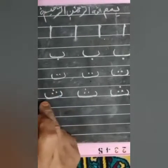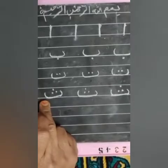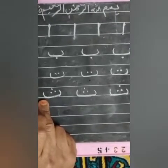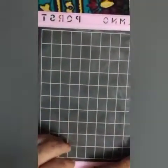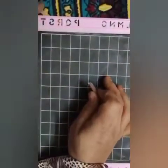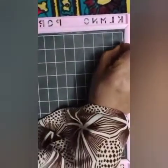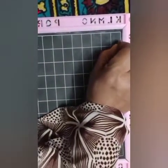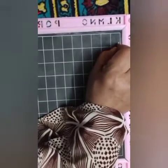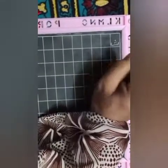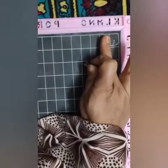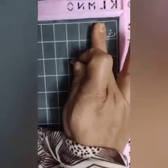Kya ban gaya beta? Fa. Ek box ko chhodo, phir likho. Ek box chhodke likhte jao, bolte jao. Bismillahirrahmanirrahim. Fa — ek box ko chhodna hai, phir likho.